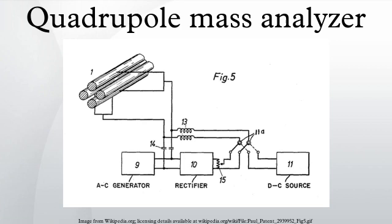For example, Q1 may be set to filter for a drug ion of known mass, which is fragmented in Q2. The third quadrupole can then be set to scan the entire m/z range, giving information on the intensities of the fragments.